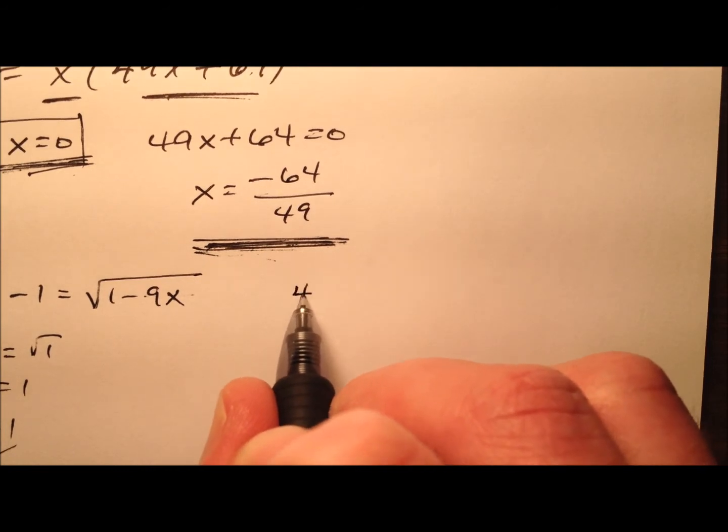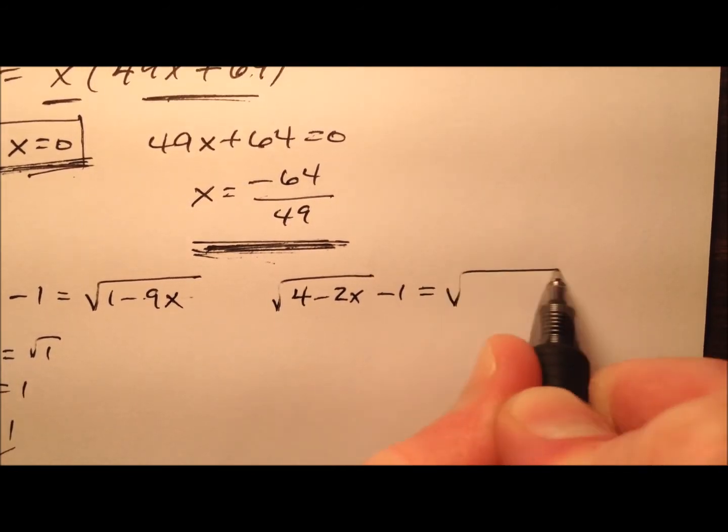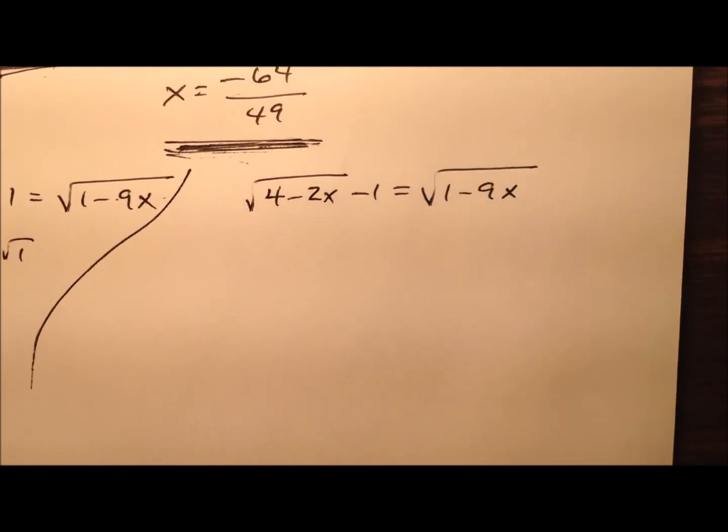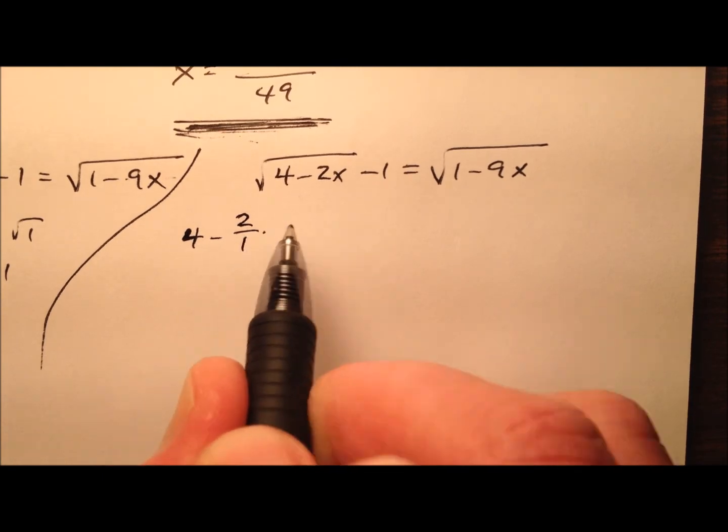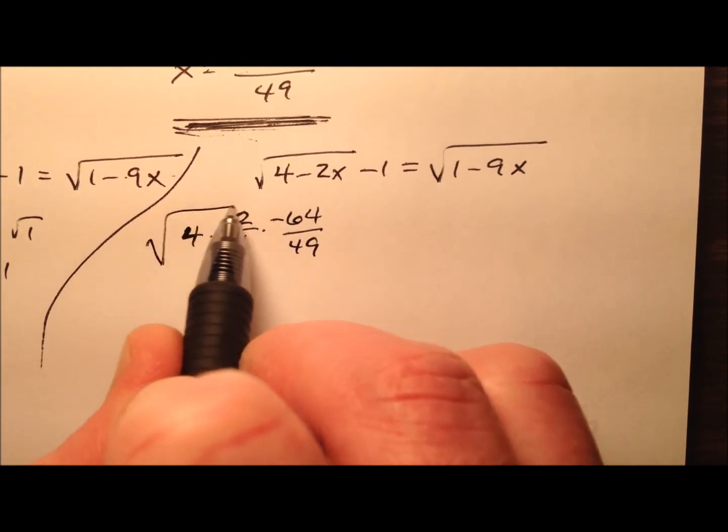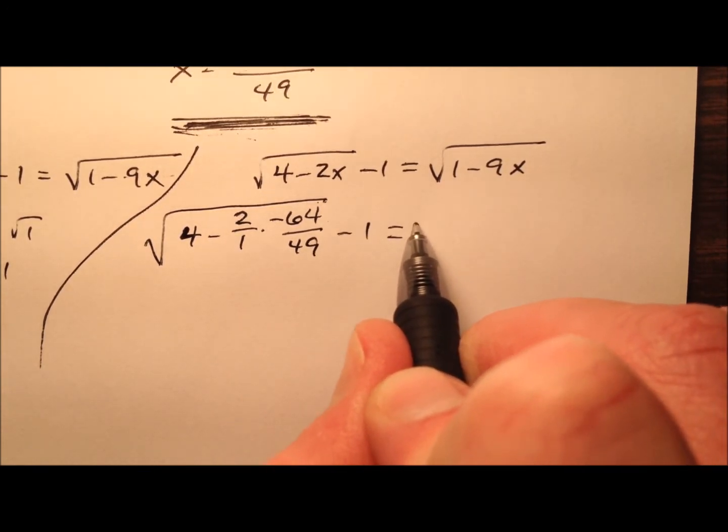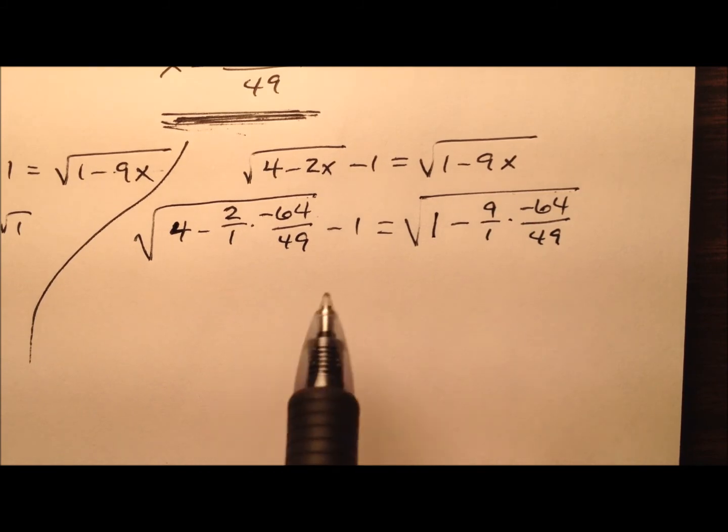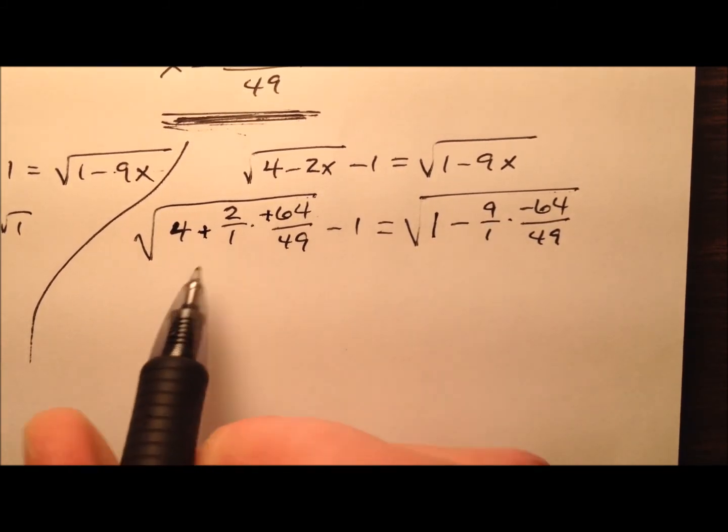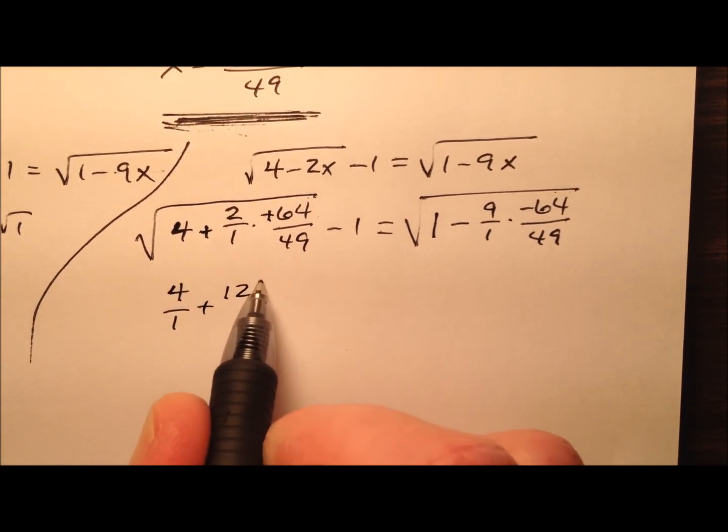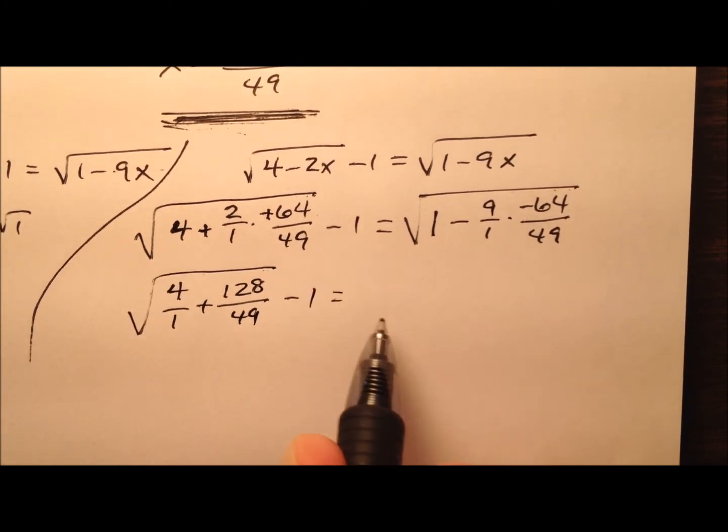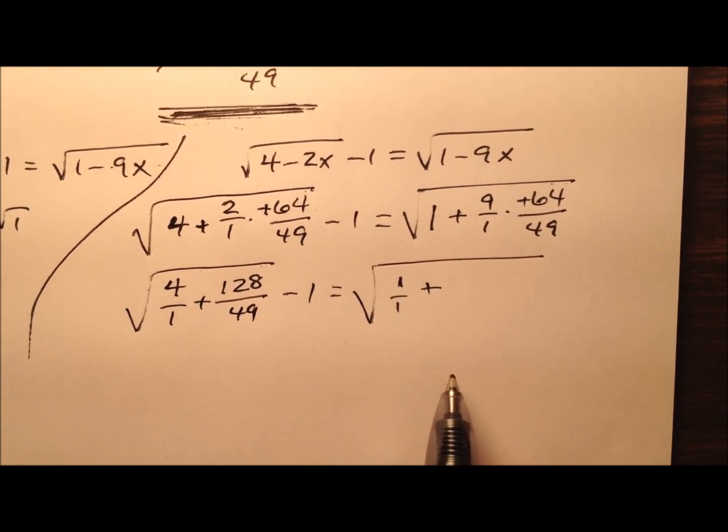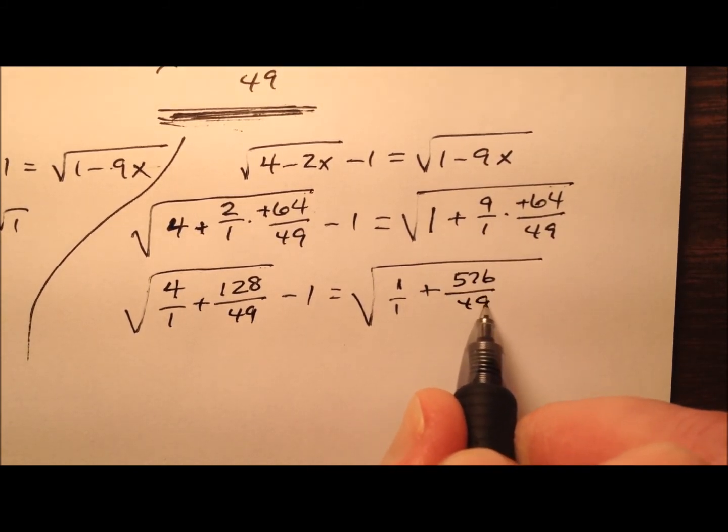Let's try this fraction here. I will one more time rewrite this original equation and we will plug this negative 64 over 49 in. So the square root of 4 minus 2 over 1 times negative 64 over 49, that's all under the square root minus 1 equals the square root of 1 minus 9 over 1 times negative 64 over 49. Got our work cut out for us. So the two negatives cancel. It looks like I have 4 over 1 plus 128 over 49 under the radical minus 1 equals, and under this one these negatives will cancel, so 1 over 1 plus, 9 times 64 should be 576 over 49.